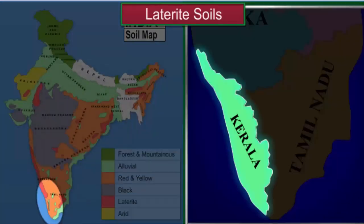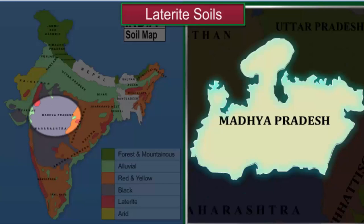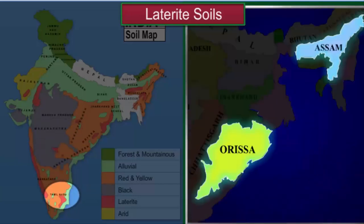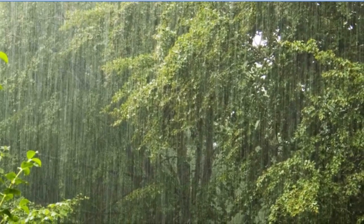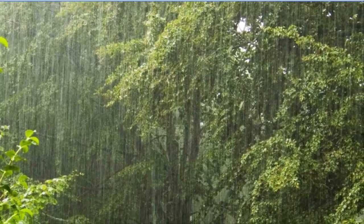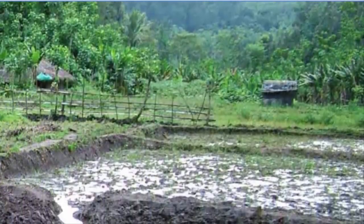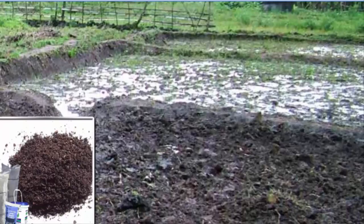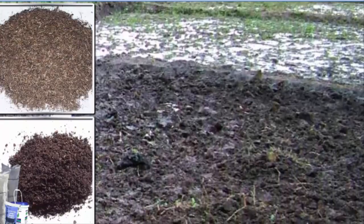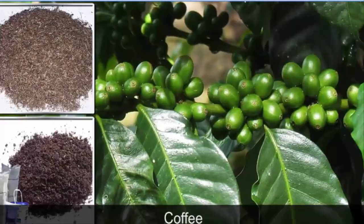Laterite soils are found in Kerala, Karnataka, Madhya Pradesh, Tamil Nadu, and parts of Orissa and Assam. All these areas experience high temperature and heavy rainfall. The soil develops by leaching due to heavy rains. Laterite soil is low in organic components but can be made cultivable with the use of adequate fertilizers and manures. It is good for cultivation of tea, coffee, and cashew nuts.